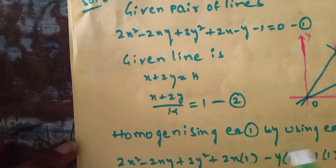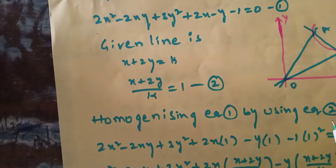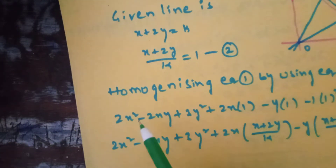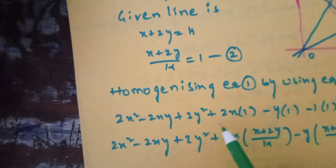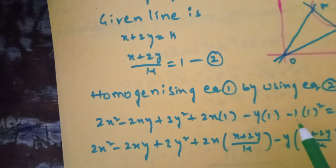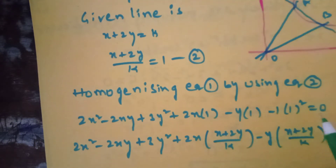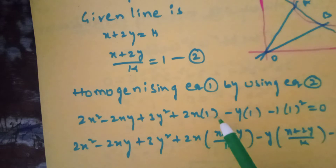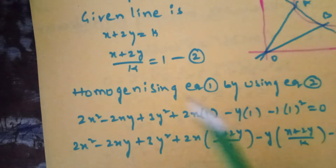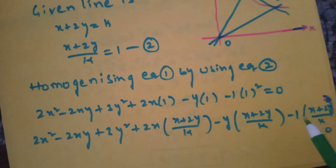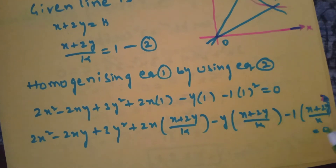So we are homogenizing equation 1 by using equation 2. We substitute x + 2y / k in place of 1. So: 2x² - 2xy + 3y² + 2x · (x + 2y)/k - y · (x + 2y)/k - (x + 2y)/k · (x + 2y)/k = 0.